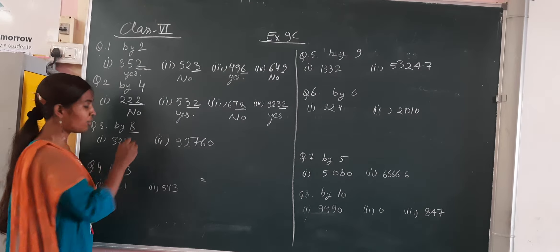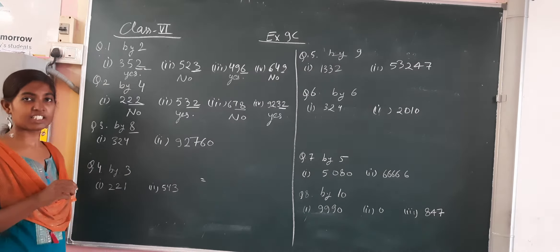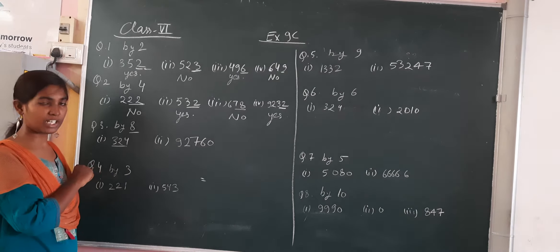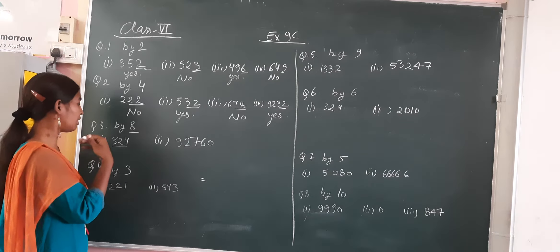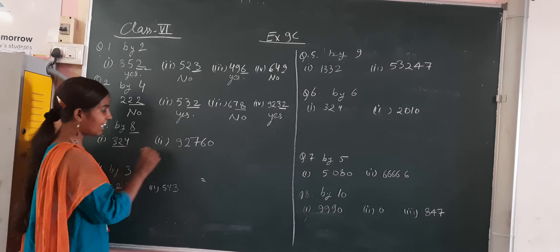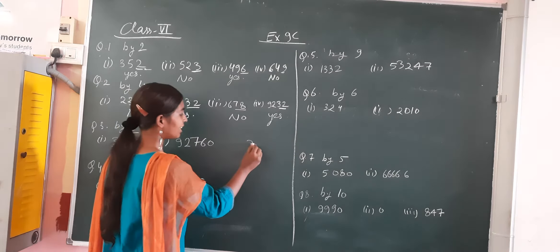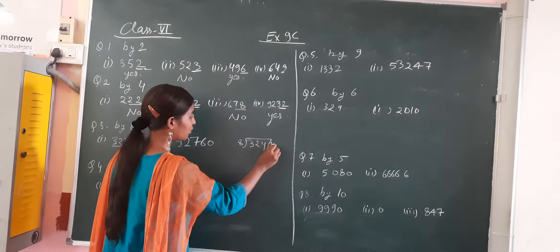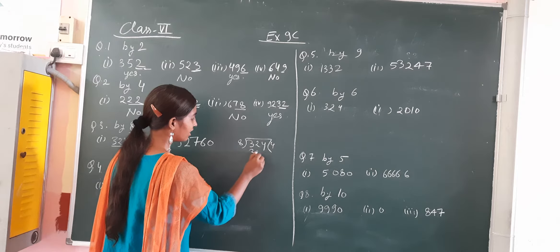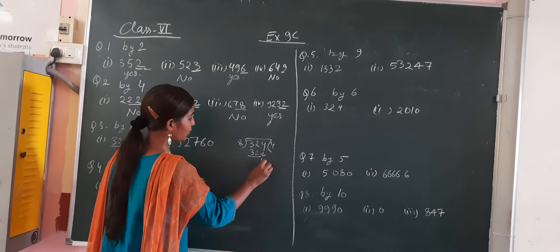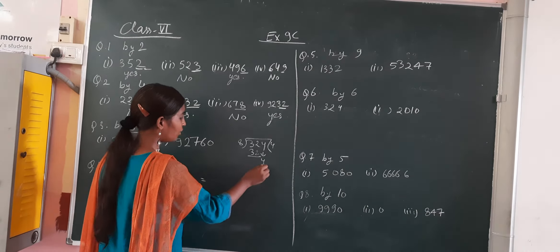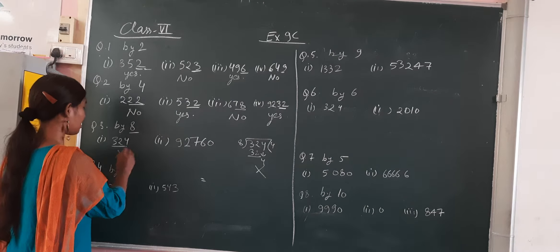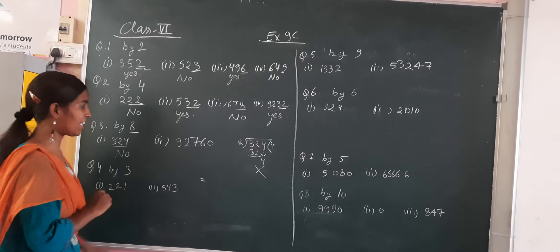Then by 8. Now we are checking whether the number is divisible by 8. If the last 3 digits are divisible by 8, then the whole number is also divisible by 8. Check: last 3 digits are 324. Divide 324 by 8 — 8 times 40 is 32, bring down 4. So it is not divisible by 8. No, this number is not divisible by 8.